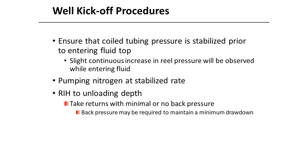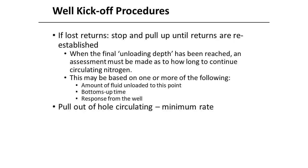Let's review well kickoff procedures. We need to ensure that coiled tubing pressure is stabilized prior to entering the fluid top. A slight continuous increase in coiled tubing reel pressure will be observed while entering fluid in the well. We need to pump nitrogen at a stabilized rate, then continue to run and hold to unloading depth. We need to take returns with minimal or no back pressure — though back pressure may be required to maintain a minimum drawdown, so please check with the reservoir team. During the well kickoff procedure, pay attention to these scenarios: if lost returns, stop coiled tubing and pull up until returns are re-established. When the final unloading depth has been reached, an assessment must be made as to how long to continue pumping nitrogen through the coiled tubing. This may be based on one or more of the following: amount of fluid unloaded to this point, bottoms-up time, or response from the well. Finally, start pulling out of hole while circulating at minimum nitrogen rate.